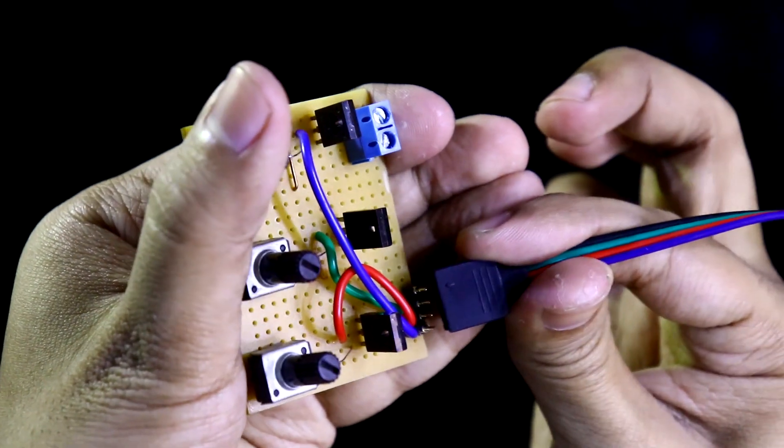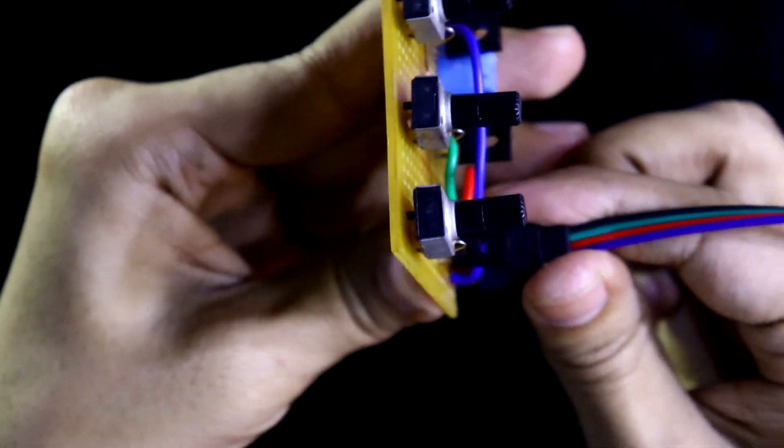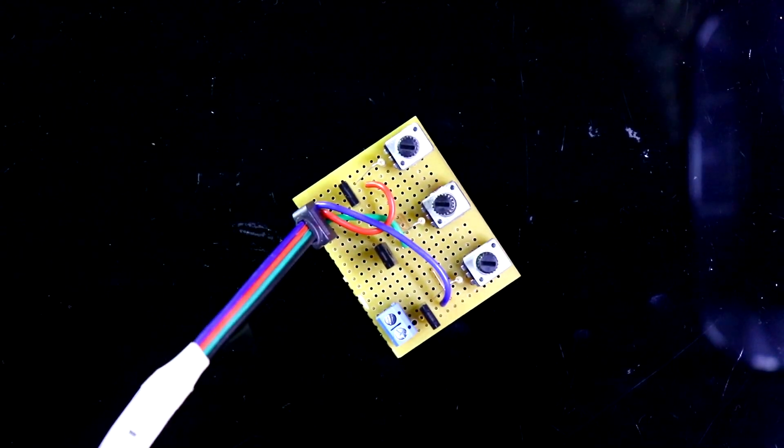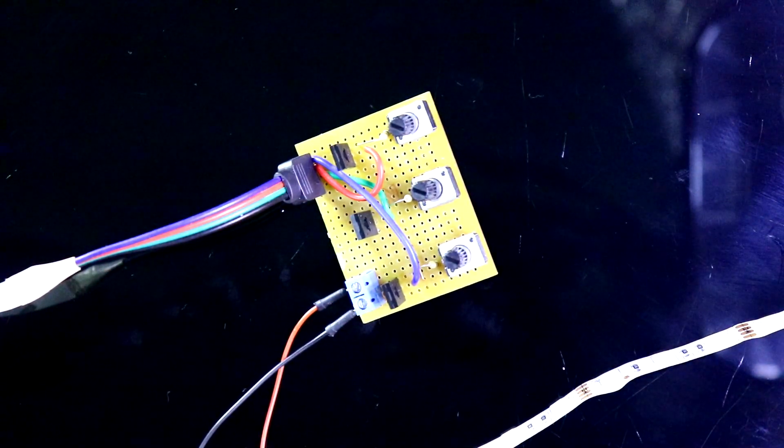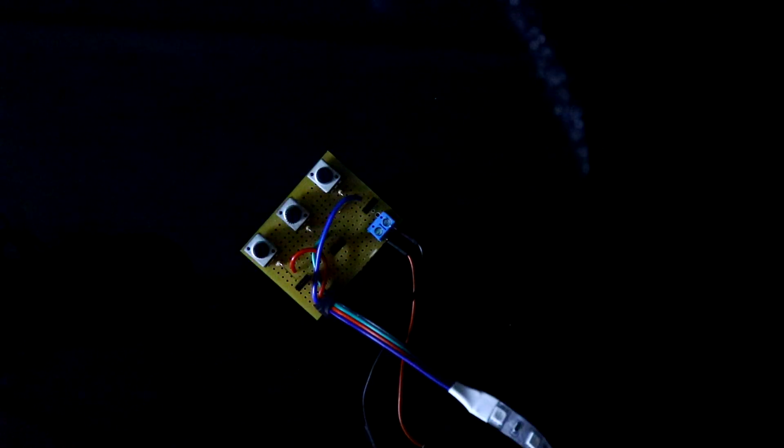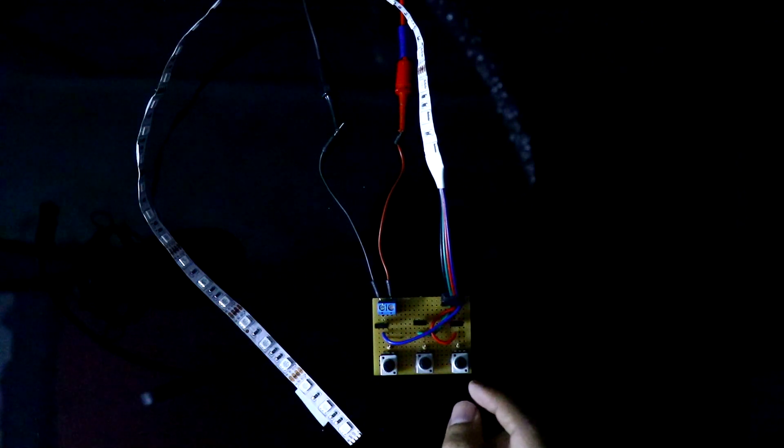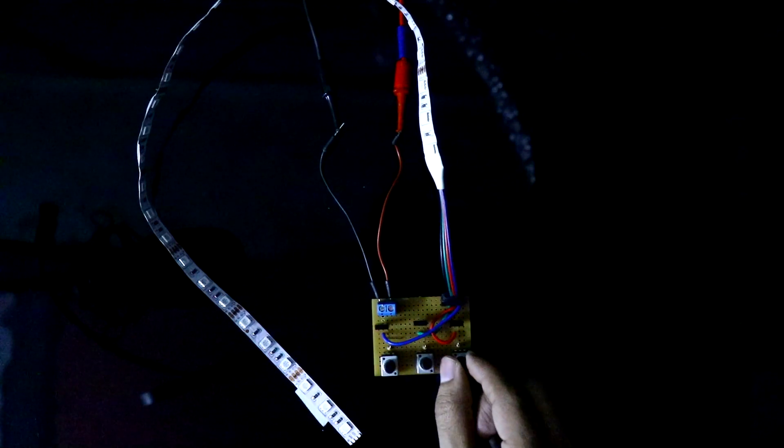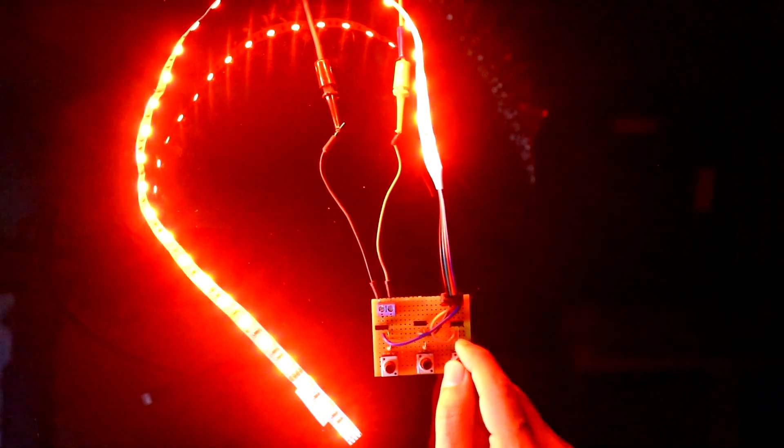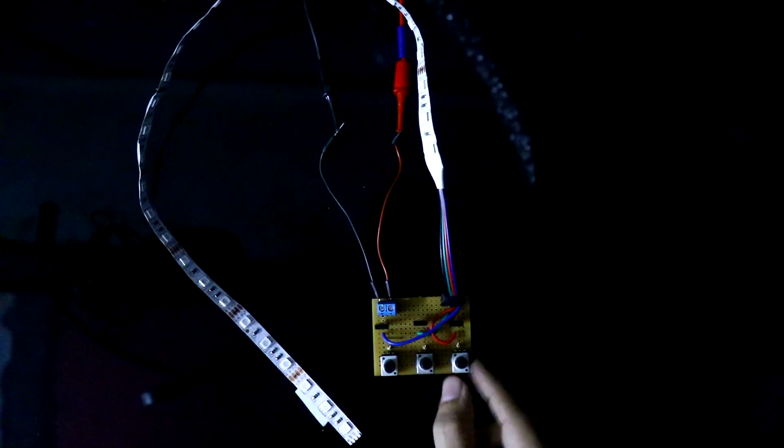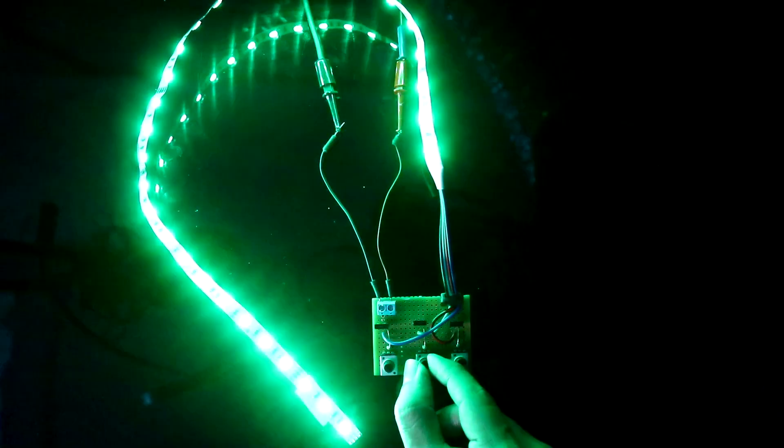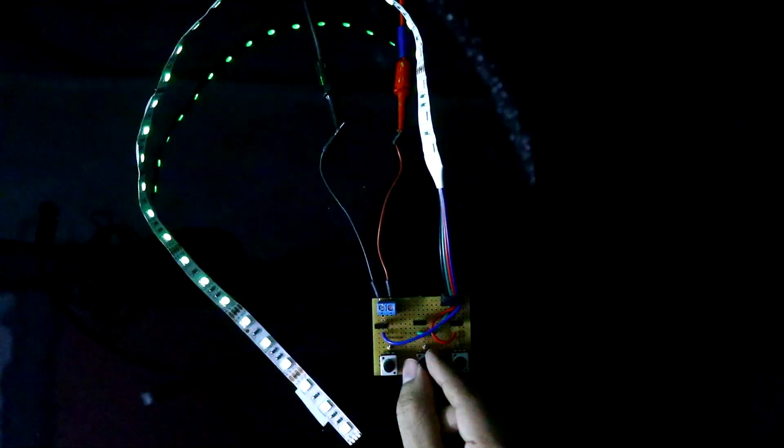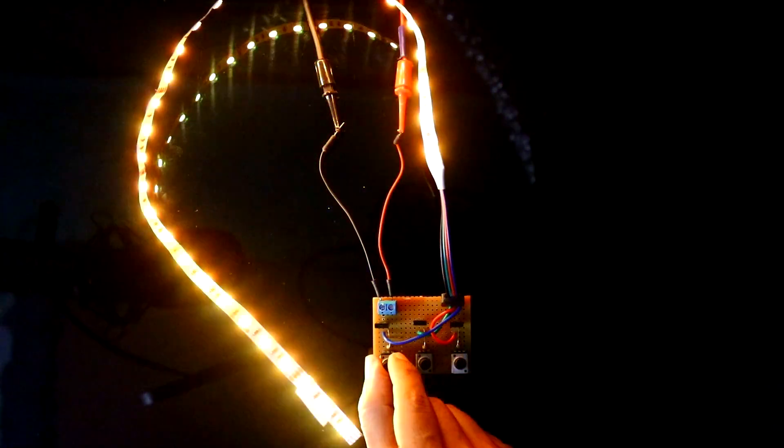Now I'm turning off my light. All the potentiometers are in the minimum range - this is for R, G, and B. Increasing R value, G, and blue. With this you can mix up colors and you can do as you wish.